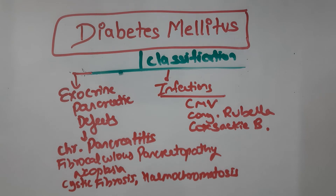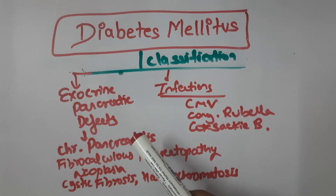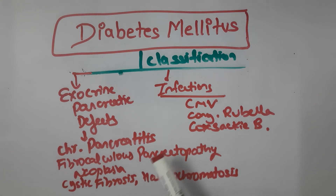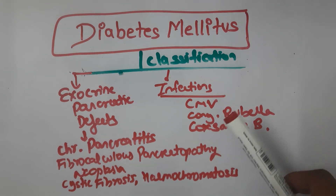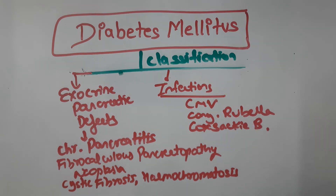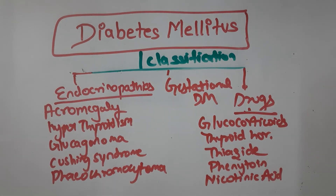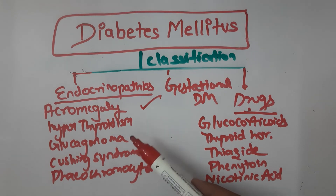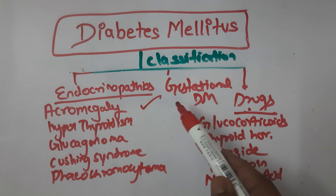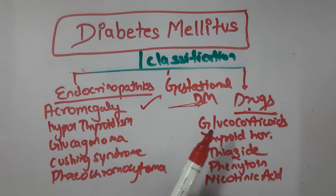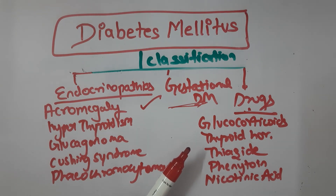Other causes of diabetes mellitus include exocrine pancreatic defects such as chronic pancreatitis, fibrocalculous pancreatopathy, neoplasias, cystic fibrosis, and hemochromatosis. Infections such as cytomegalovirus, congenital rubella, and Coxsackie B virus can also cause diabetes. Endocrinopathies including acromegaly, hyperthyroidism, glucagonoma, Cushing's syndrome, and pheochromocytoma are additional causes. Gestational diabetes mellitus is another distinct category.